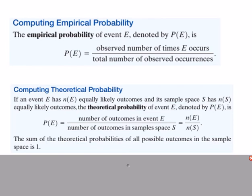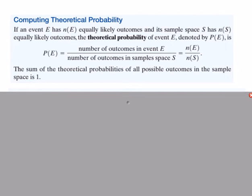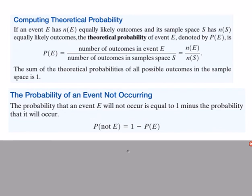Empirical probability is based on actual data after events have occurred. If you flip a coin and it lands heads seven out of ten times, your empirical probability is 7/10. The probability of something not occurring is like a complement: it equals one minus the probability of it occurring. For example, if something has a 54% chance of happening, the chance of it not happening is 1 − 0.54.